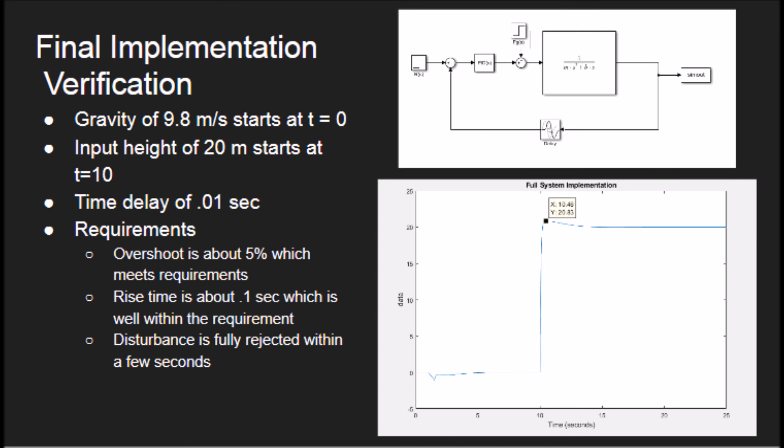From this graph, we can see that the overshoot is less than five percent and the rise time is about 0.1 seconds. Also, all the disturbance is rejected so the response to the closed loop system meets all our design requirements.